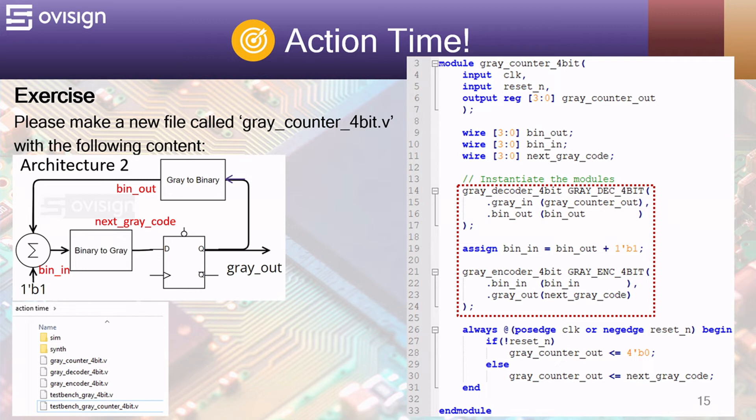In this simple design we are going to instantiate the gray decoder and gray encoder, interconnect them together, and store the value in a parallel in parallel out register. The mechanism behind this circuit is very simple.